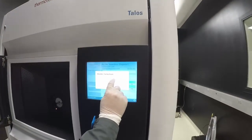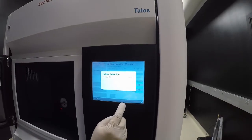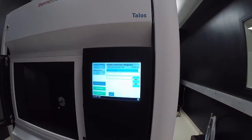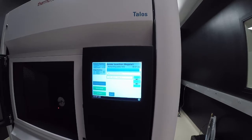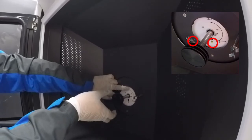On the touch screen you must select the holder type. In this instance, single tilt holder. It will then take a couple of minutes to pump. During this step, vacuum will pull on the holder, so hold it securely.